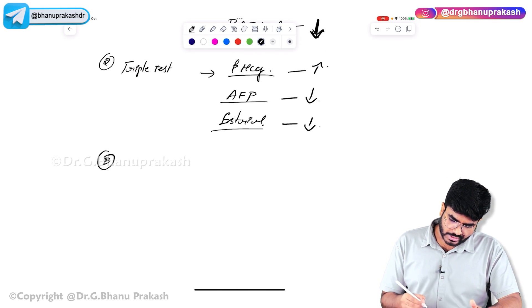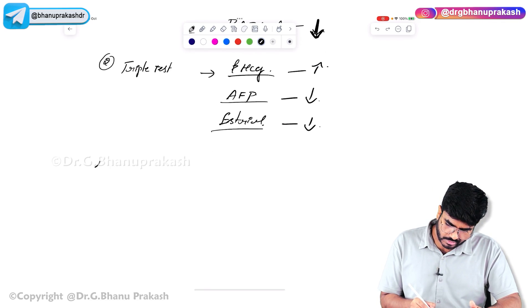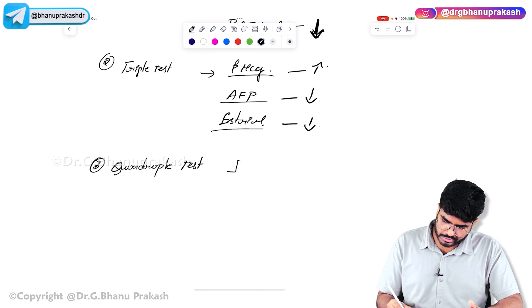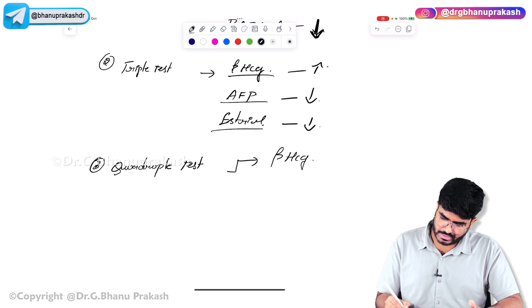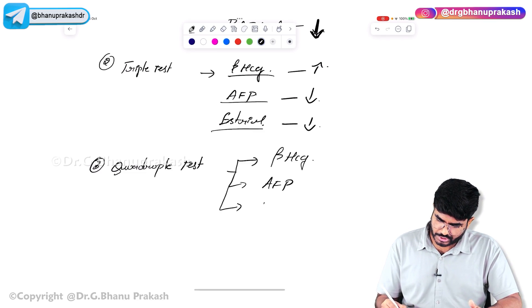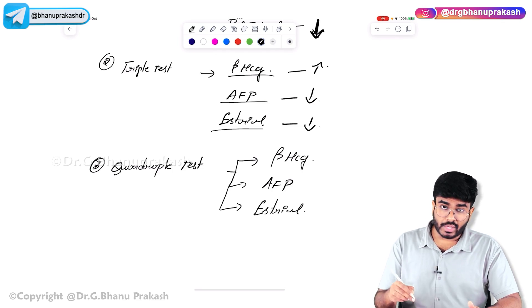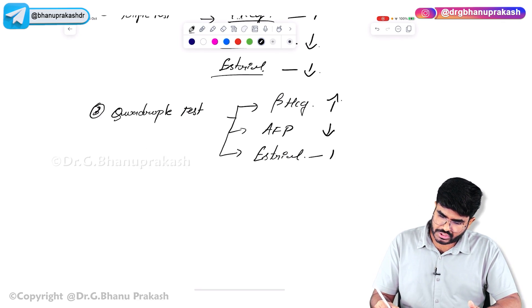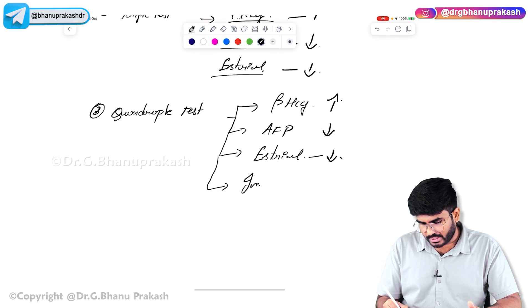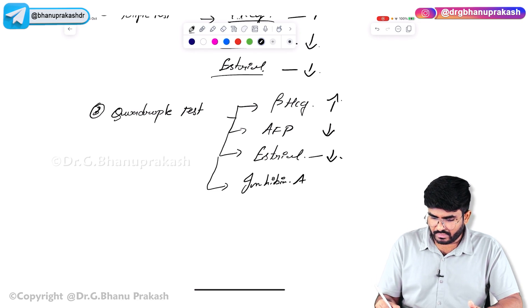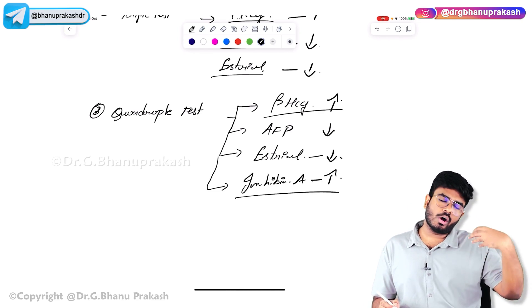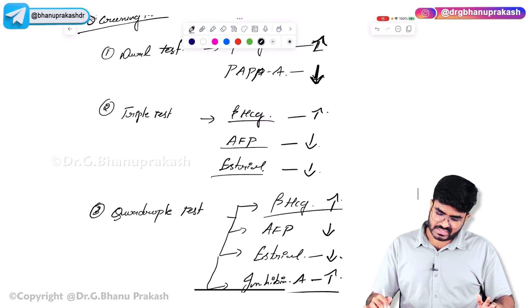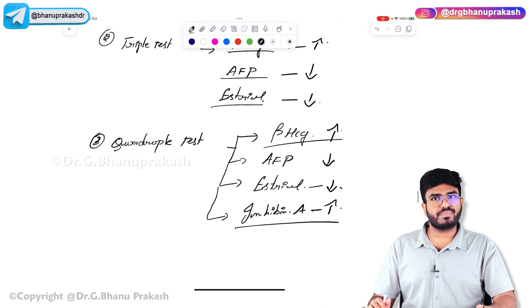The third is the quadruple test. It checks beta-HCG (elevated), alpha-fetoprotein (decreased), estriol (decreased) — all measured in maternal serum — and the fourth marker is inhibin A, which is also elevated. So in the quadruple test: beta-HCG and inhibin A are elevated; all others are decreased.